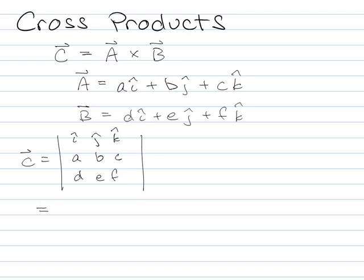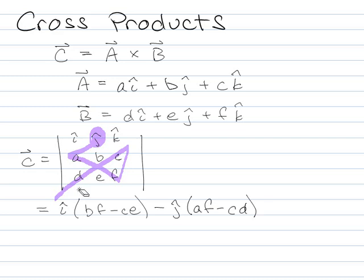If you remember how to compute a determinant, first I take this guy and multiply him times this minus that. So it's going to be I hat times BF minus CE. Then for a 3D matrix determinant, we switch the sign. The next one is going to be minus J hat times AF minus CD. And then the last part again is positive, so it's K hat times AE minus BD.